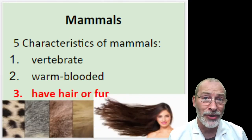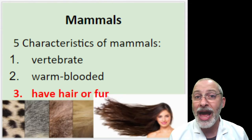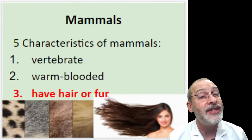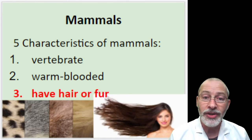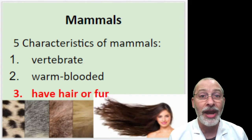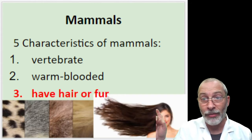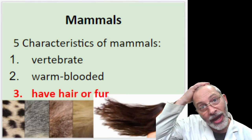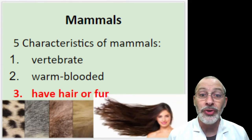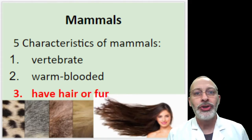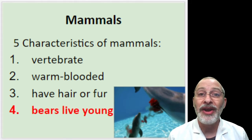The third characteristic is that mammals have either hair or fur. Later this week in the lab you'll be learning more about the differences between hair and fur. Some mammals have more hair and some might have less, but all mammals do have at least a few strands of hair or fur.